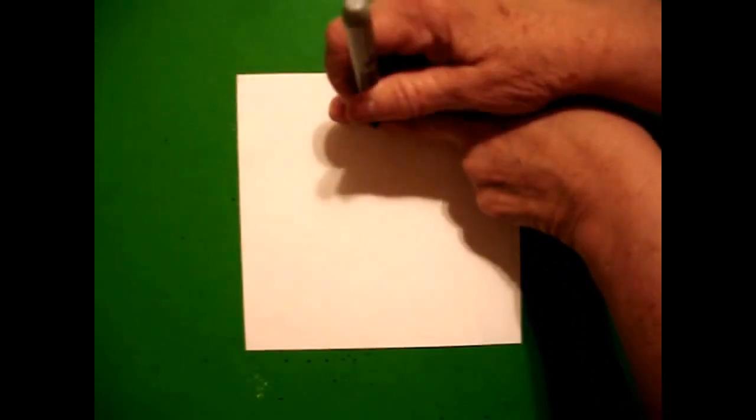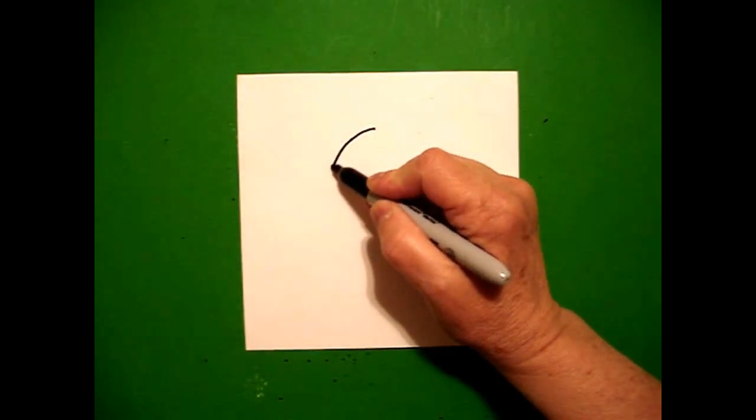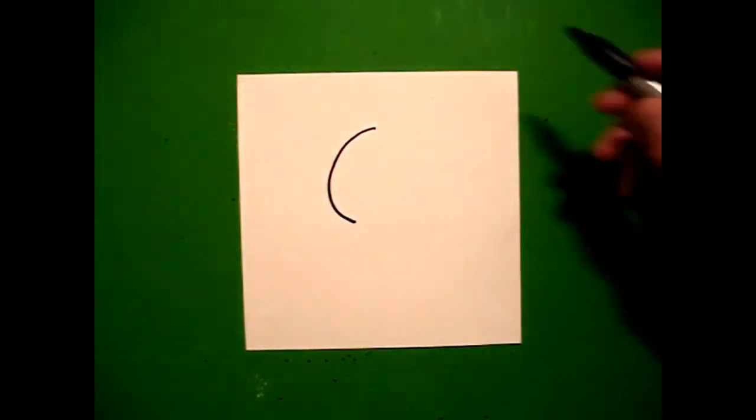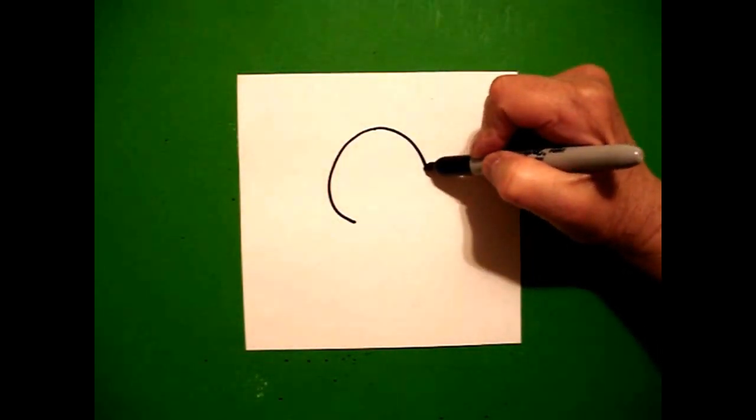Put two fingers at the top in the center and put a dot. And from that dot, we're going to draw going down. We're going to draw a curve line down on the left. Come back to the dot. Curve line down on the right.